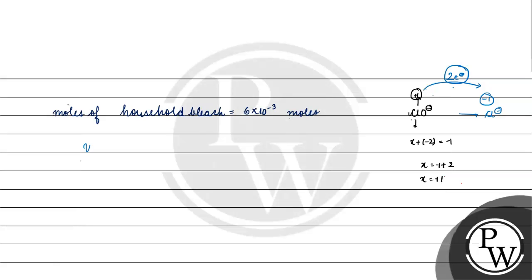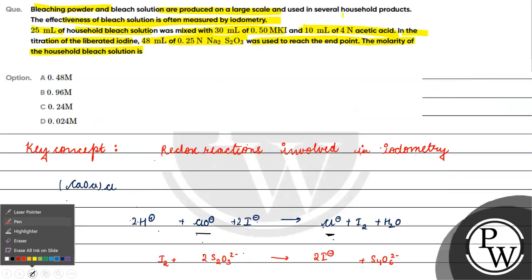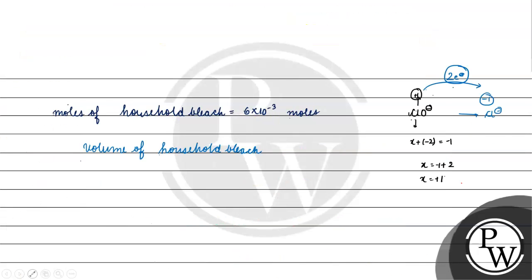Now we know the volume. Volume of household bleach has been given as 25 ml. We convert ml to liters, so 25 into 10 to the power minus 3 liters, because 1 ml equals 10 to the power minus 3 liters.